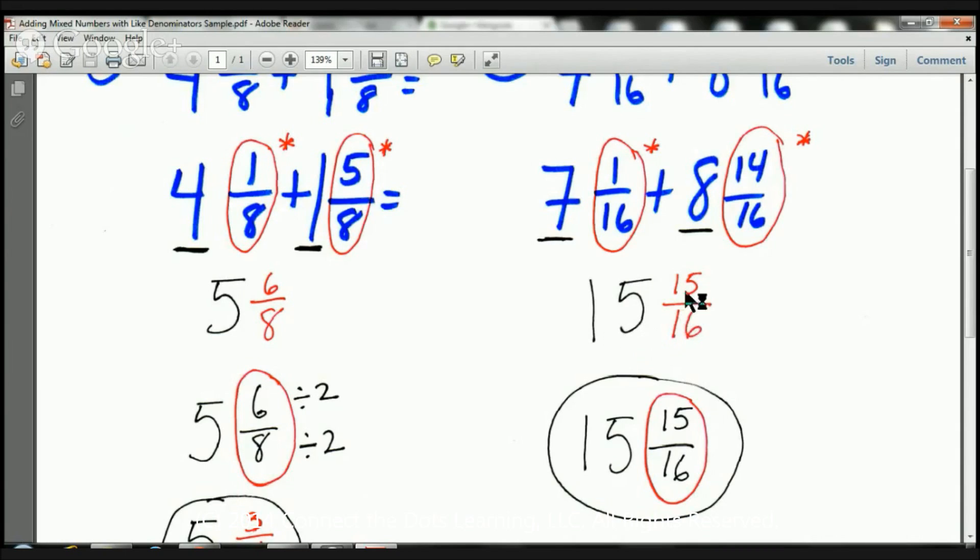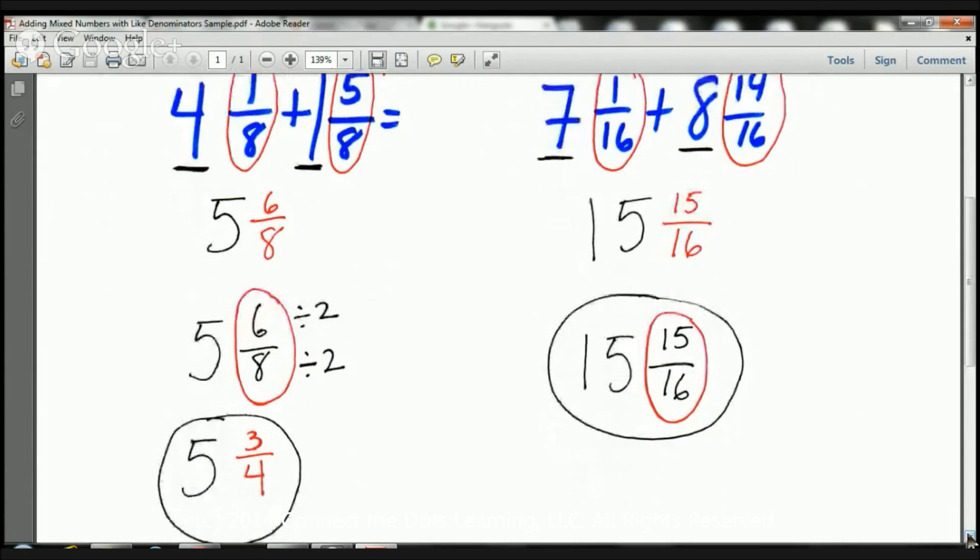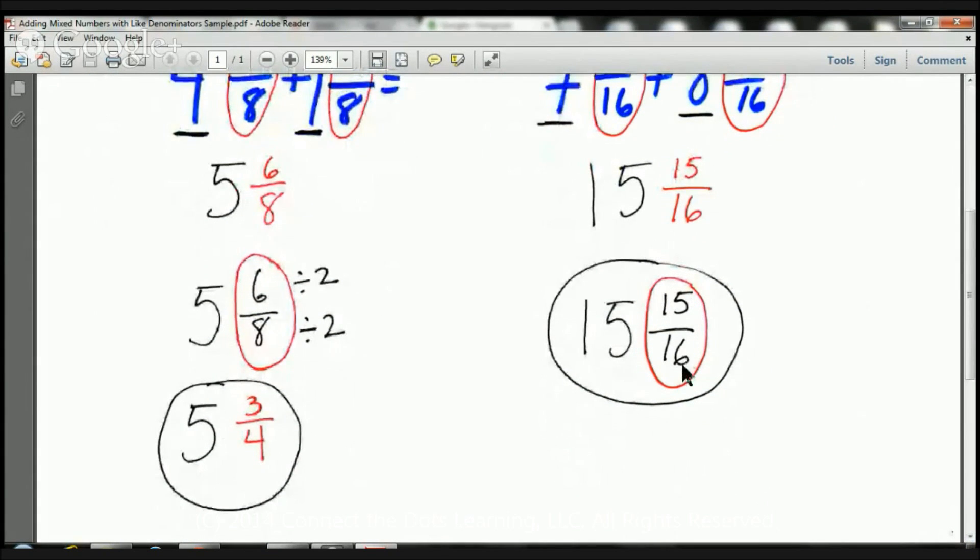Now I have to ask myself, is it possible for me to reduce 15 sixteenths? Well, the answer is no. Is there a number that we can divide both of these by? If I try to get to 16, 1 times 16 is 16, 2 times 8 equals 16. Can 2 go into 15? No. 4 times 4 equals 16. Can 4 go into 15? No. So that's it.